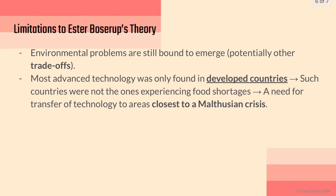What are some of the limitations or drawbacks? Firstly, environmental problems are still bound to emerge — we can't possibly prevent every issue that comes from population growth and food supply challenges. There may be trade-offs: as you pursue GM crops, nutrients may be depleted, and GM crops could also require certain pesticides or fertilizers that could harm biodiversity in the area. Also, most advanced technology is still only found in developed countries, which are not actually the ones experiencing food shortages — they have strong government policies and income to import foodstuffs and sustain themselves.